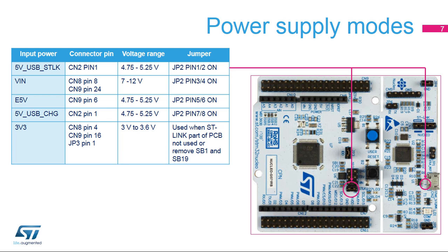5V can be provided by a USB charger — a jumper connecting pin 7 and 8 of JP2 header must be present. 3.3V power supply can be used provided that the ST-Link part is not powered or the solder bridges SB1 and SB19 are removed. The figure highlights the first possibility: powering the MCU board from the host computer connected to ST-Link, and shows the location of jumper 2, pin 1 and 2. This is the default setting.